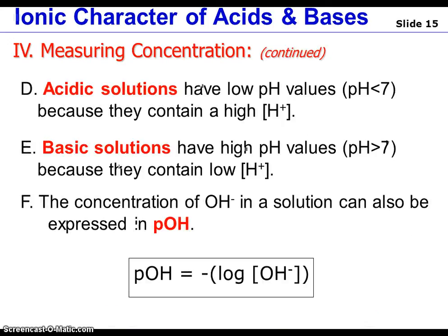An acidic solution will have a very low pH value — typically less than 7 — because it has a very high hydrogen ion concentration. This may seem counterintuitive, but remember that logarithms are exponential, so they're sort of the opposite of what you would expect. A basic solution is going to have a very high pH value because it has a very low hydrogen ion concentration.